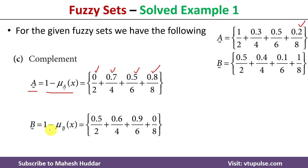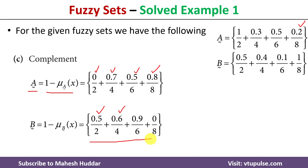Similarly, the complement of B is equivalent to 1 minus the degree of membership of an element x in fuzzy set B. For element 2, degree of membership is 0.5, so 1 minus 0.5 is 0.5. The degree of membership of 4 is 0.4, so 1 minus 0.4 equals 0.6, and so on. Once you perform it, you get the complement of B.